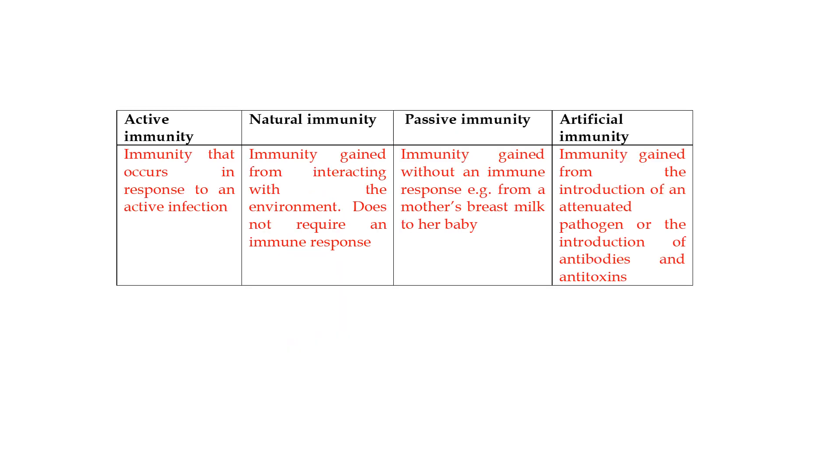I asked you to differentiate between different types of immunity. That's pretty straightforward. Active immunity is the immunity that you get after you've been exposed to a pathogen and you have an infection. Your body just responds actively. Natural immunity is similar to active immunity in the sense that you can get it from interacting with your environment. You can get it from interacting with your environment. It doesn't necessarily require an immune response because as children you're exposed to all kinds of bacteria all day.